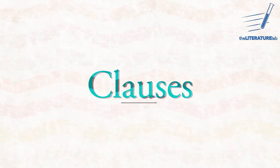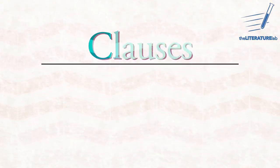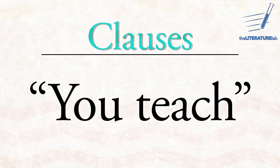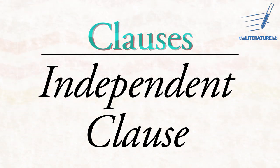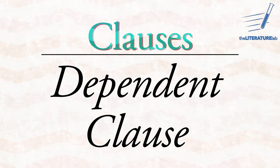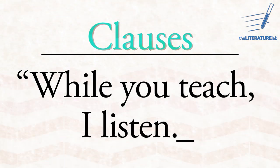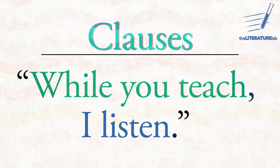Before we address the first few problems, I need to explain the idea of clauses. A clause is a group of words containing a subject — a noun — and an action word, a verb. For instance, 'I listen,' or 'you teach.' Each of these is an independent clause, because each one makes sense by itself. The other kind of clause is a dependent clause, one whose meaning depends on another clause. Take the sentence: 'while you teach, I listen.' The first clause depends on the second clause.